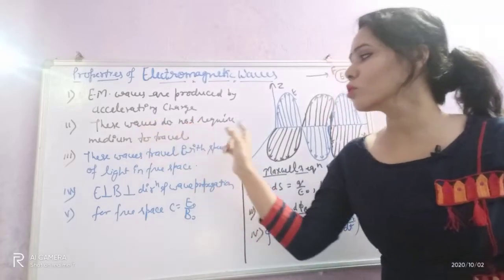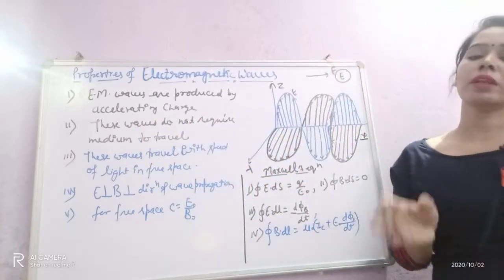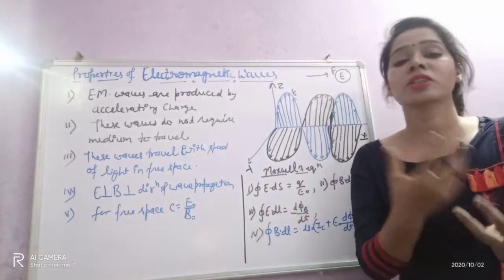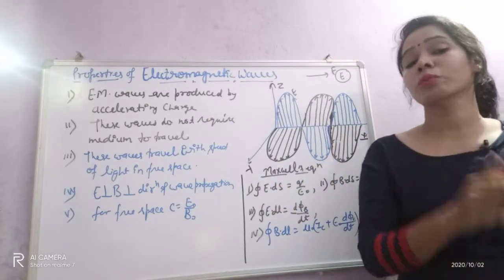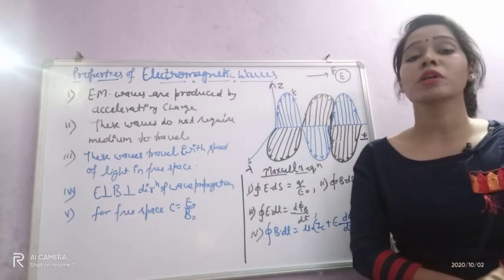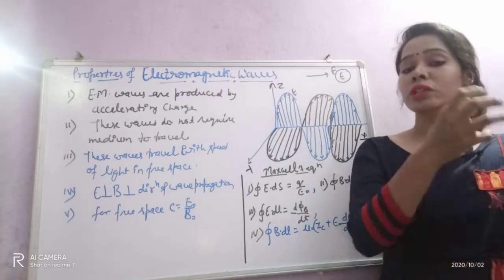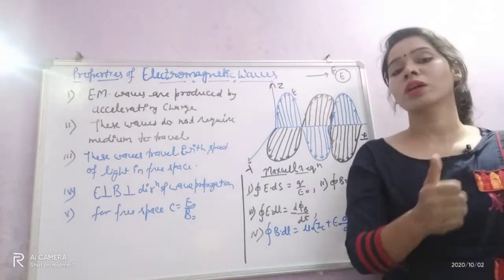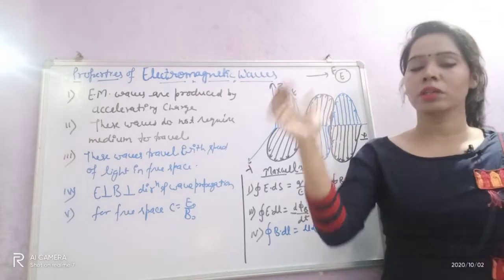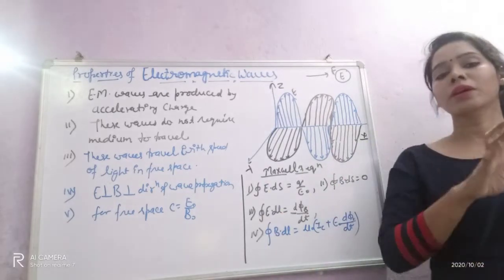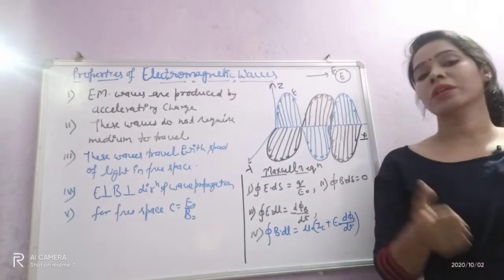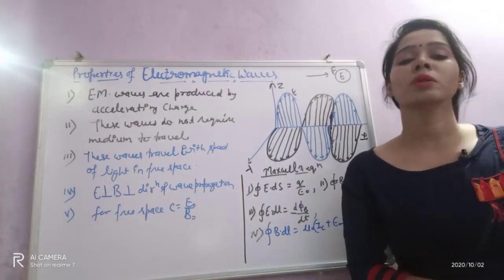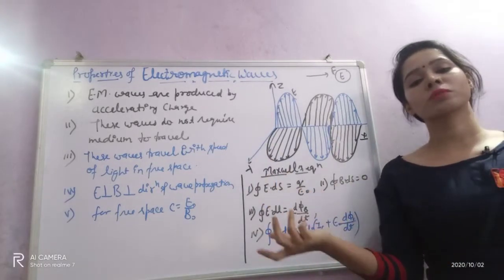The second property is that these waves do not require a medium to travel. I have already explained that sunlight is also electromagnetic radiation, and it does not need a medium to reach our Earth. From the Sun to the Earth, there is no medium — only near our Earth is there a medium. But electromagnetic waves can travel without a medium; they can move in free space also.